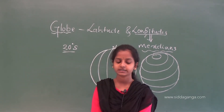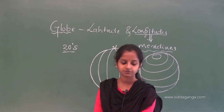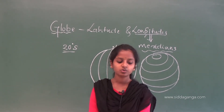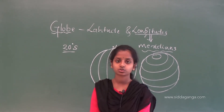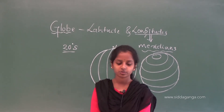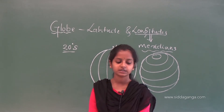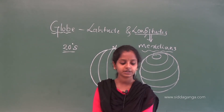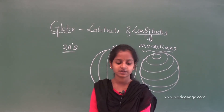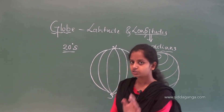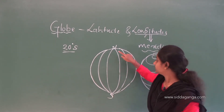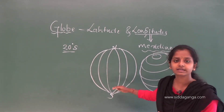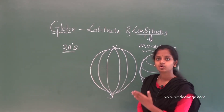Unlike the parallels of latitude, all the meridians are of equal length. Because of this, it was difficult to number the meridians. Hence, all countries decided that the count should begin from the meridian which passes through Greenwich, where the British Royal Observatory is located.